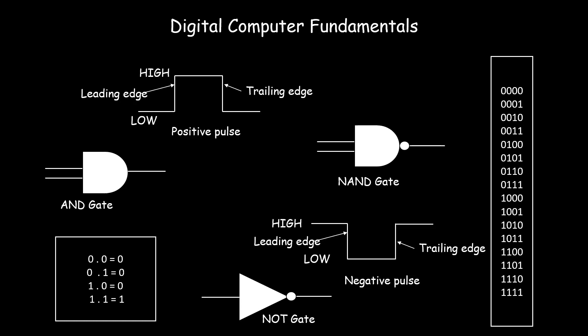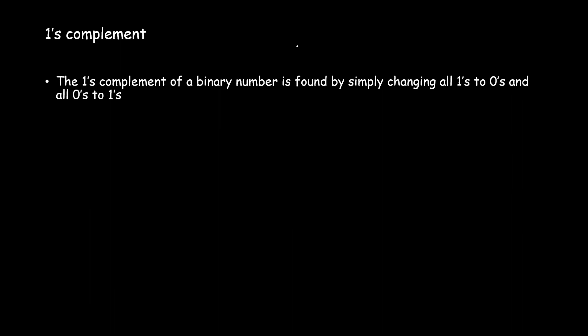Hello all, welcome back to the tutorial on digital computer fundamentals. In today's session, let us discuss about the one's complement method. The one's complement of any binary number is found by simply changing all the ones in the binary number to zeros and all the zeros to ones.